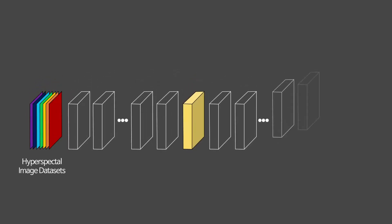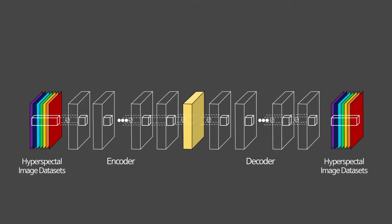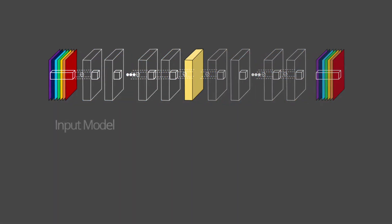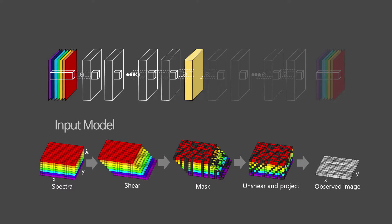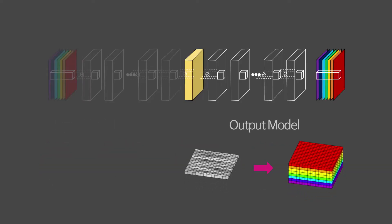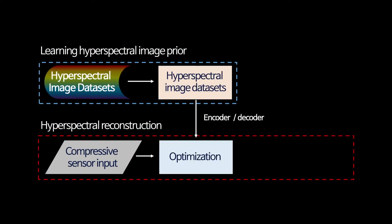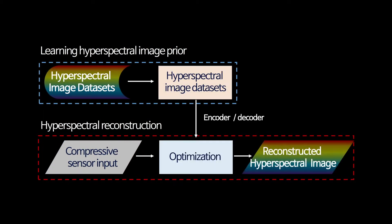The first key point of this technology is to learn the prior probability of a hyperspectral image using a convolutional autoencoder, one of the significant deep learning models. An autoencoder model is a network that learns the function of generating the same output as the input given. This nonlinear model is able to learn the data distribution of hyperspectral images more accurately than existing linear ones.